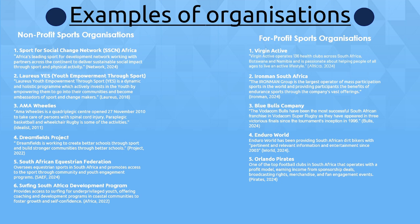On the right, we have for-profit sports organisation examples. Virgin Active operates 136 health clubs across South Africa, Botswana and Namibia and is passionate about helping people of all ages live an active life. Ironman South Africa is the largest operator of mass participation sports in the world, providing participants with the benefits of endurance sports. The Blue Bulls Company have been the most successful South African franchise in Vodacom Super Rugby. Enduro World has been providing South African dirt bikers with pertinent information and entertainment since 2003. And last but not least, the Orlando Pirates — one of the top football clubs in South Africa — operate with a profit model, earning income from sponsorship deals, broadcasting rights, merchandise and fan engagement events.